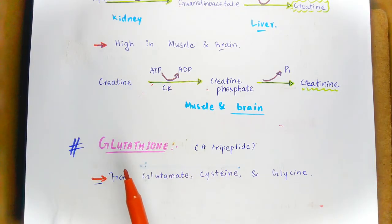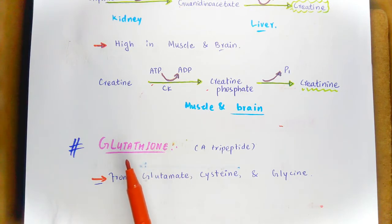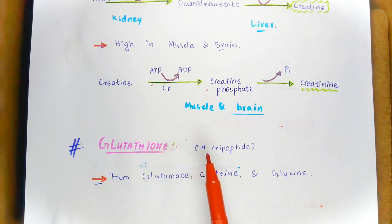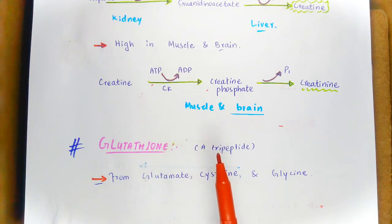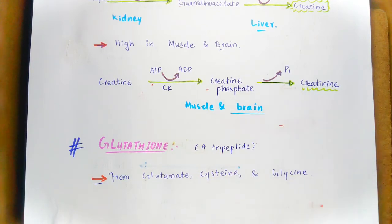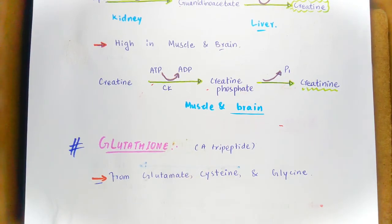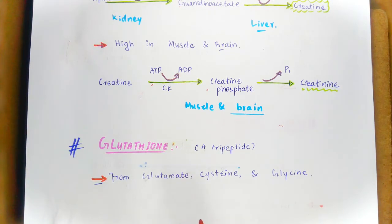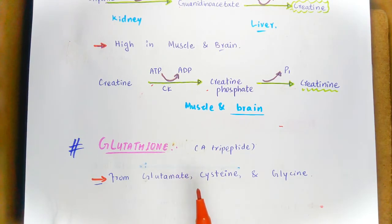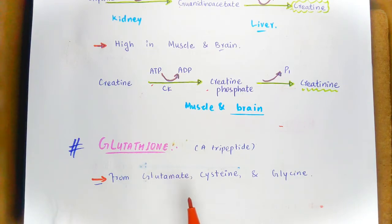Moving forward, the next special product is glutathione. Glutathione is a tripeptide which is composed of three amino acids: cysteine, glycine, and glutamate. It is formed from glutamate, cysteine, and glycine by the sequential addition of cysteine to glutamate, followed by the addition of glycine.